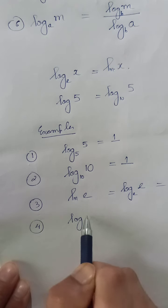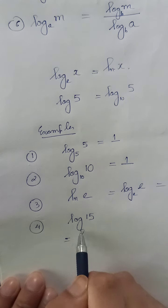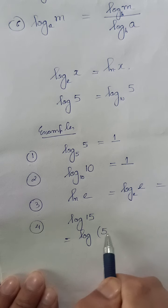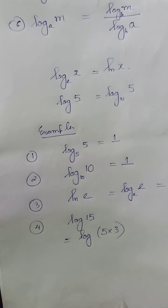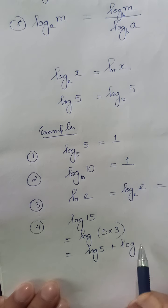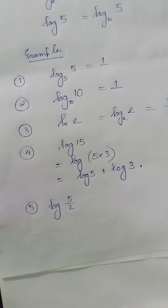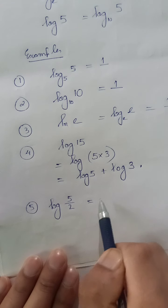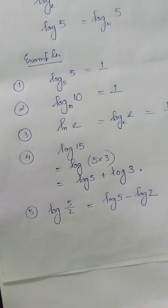Example 4: Suppose you want to find log of 15. You know log 3 and log 5 but not log 15. Log of 15 can be expressed as log of 5 times 3. Using the product rule, log of M times N equals log of M plus log of N. Example 5: log of 5 by 2, which is 2.5. Using the quotient rule, log of M by N equals log of M minus log of N.